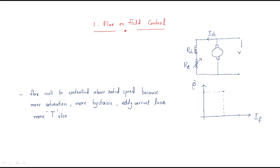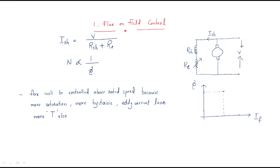By varying this external resistance, the shunt current will be varied and then the flux will be varied. The shunt current equals the voltage V divided by the shunt resistance plus external resistance. Since speed is inversely proportional to the flux, by varying this flux the speed can be varied.